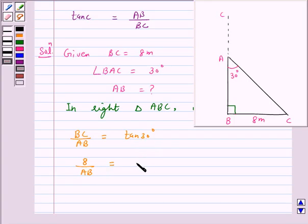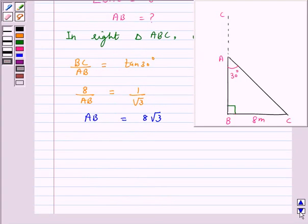So we have 8 upon AB is equal to tan 30, which is 1 over root 3. On cross multiplying, we get AB is equal to 8 root 3.